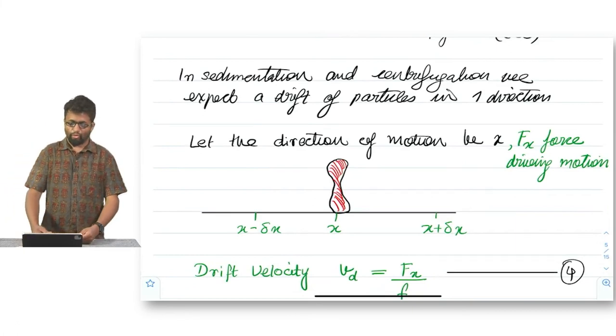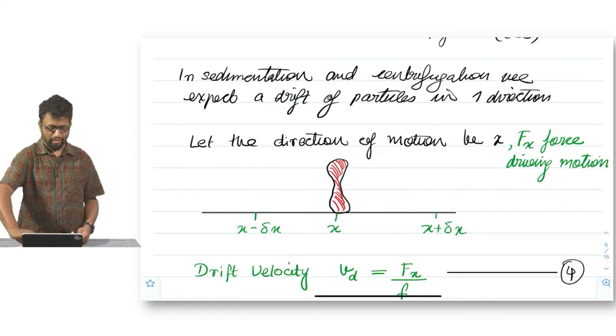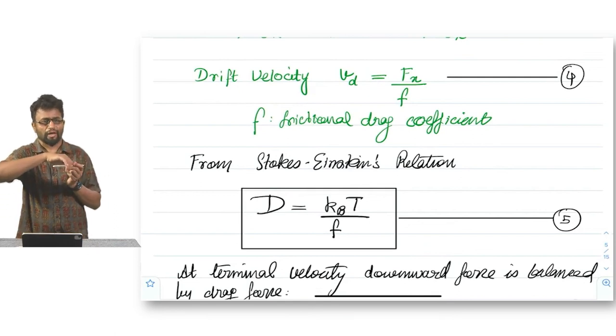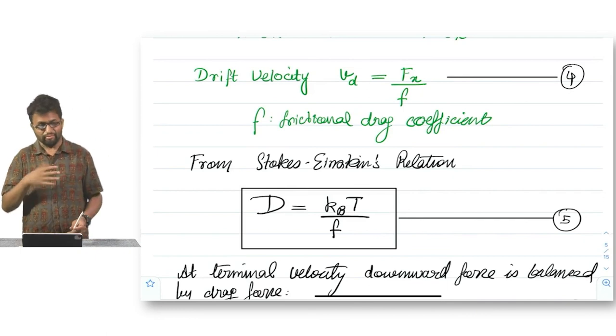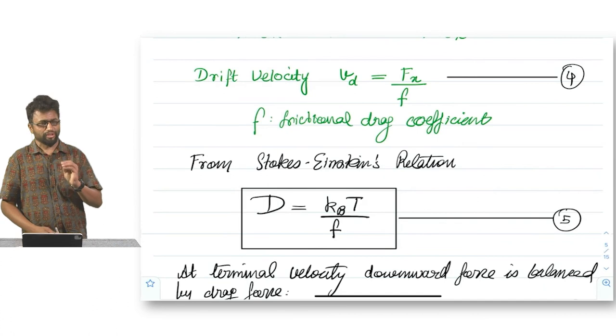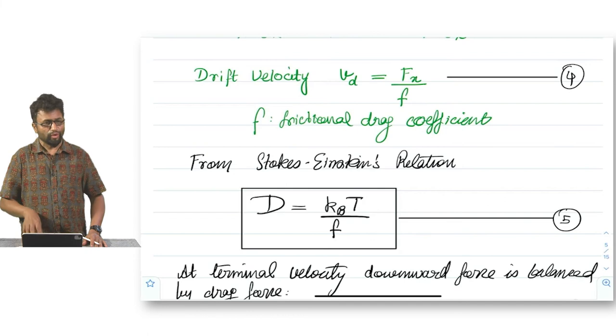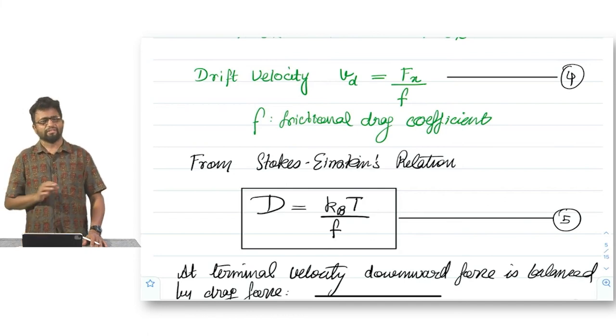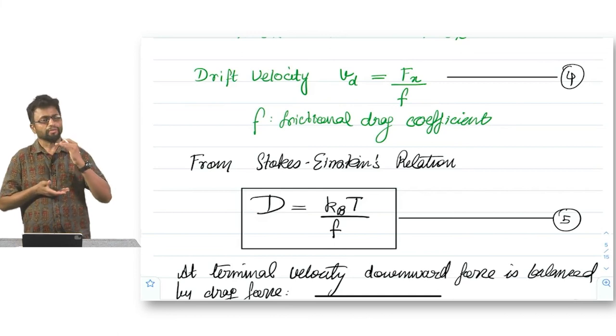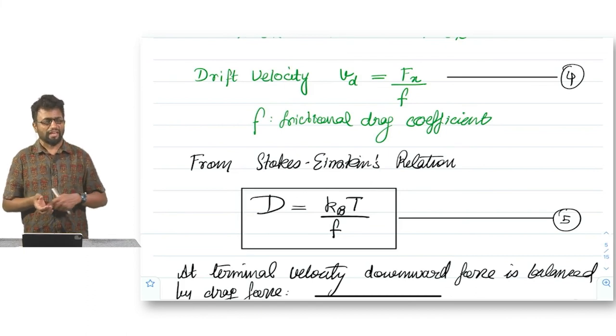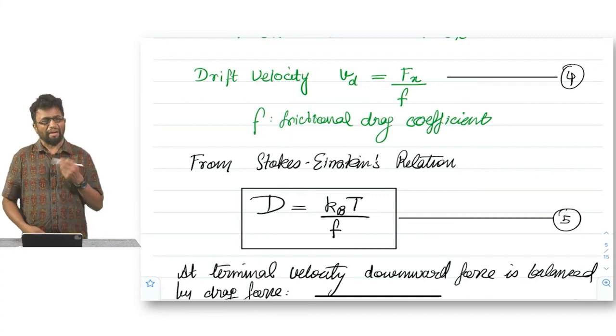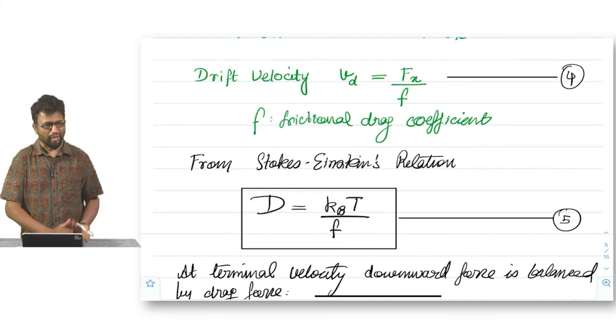In centrifugation and sedimentation, we expect the particle will move in a certain direction. Let the direction of the motion be X and Fx be the driving force. Then the drift velocity Vd will simply be Fx, the driving force, and the opposing force. The opposing tendency is fluid viscosity. This is the Stokes drag coefficient F. From Stoke Einstein's relation, we also know - Einstein did magical works which made those his miracle years, Wunder Jahre in German. That was the time he worked on quantum electrodynamics, relativity, and diffusion. This diffusion equation originated from 1905. The diffusion coefficient of a particular molecular object is the ratio of the thermal energy term KBT upon F. KB is used as an honorific to honor the work of Ludwig Boltzmann.